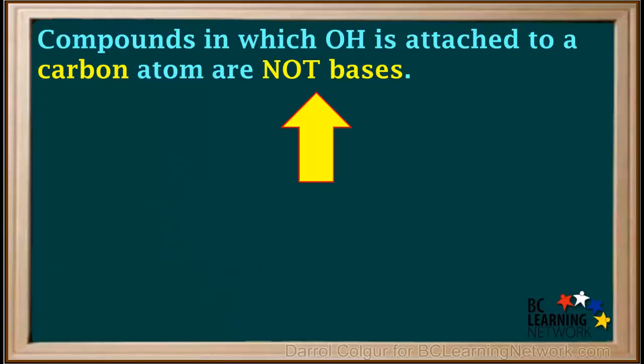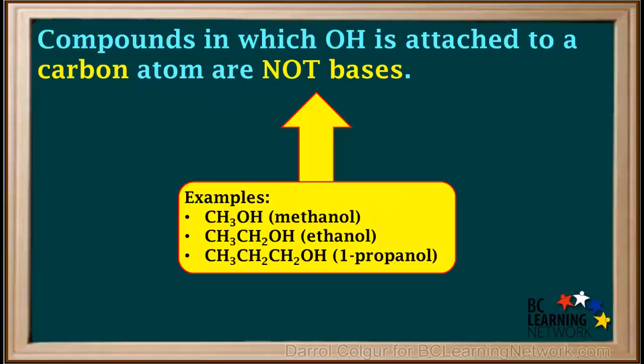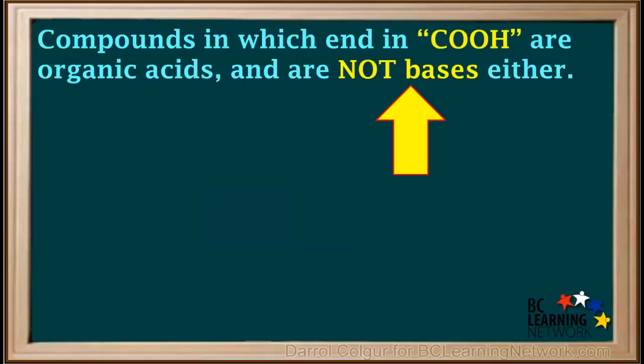So we can now summarize by saying that compounds in which OH is attached to a carbon atom are not bases. Some examples of these are alcohols like methanol, ethanol, or 1-propanol. And remember, compounds whose formula ends in COOH are organic acids, and therefore are not bases either.